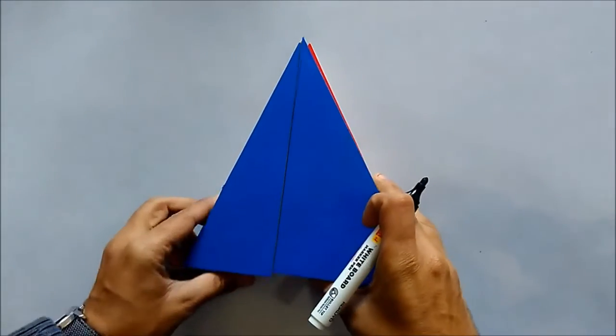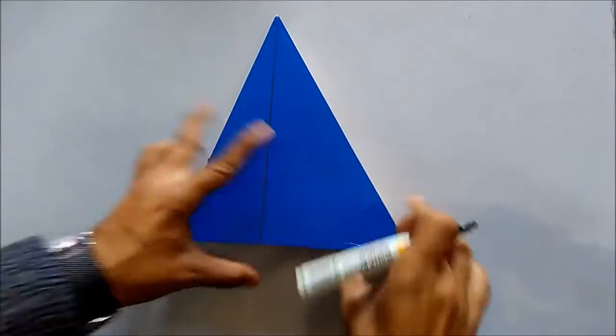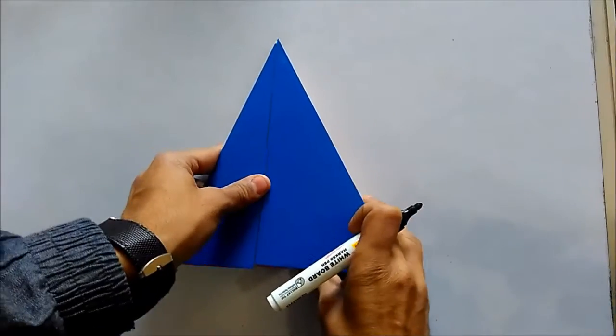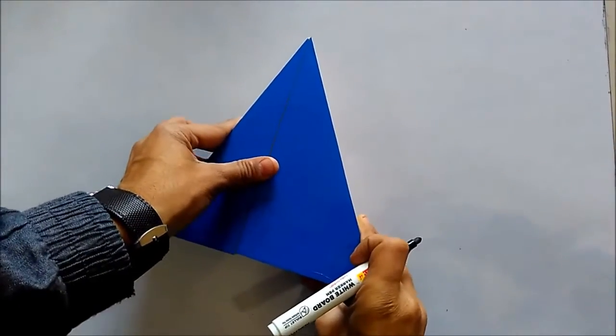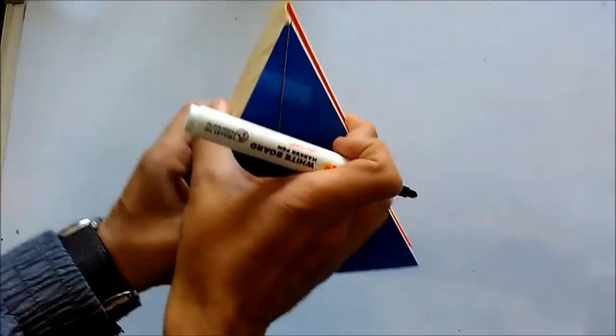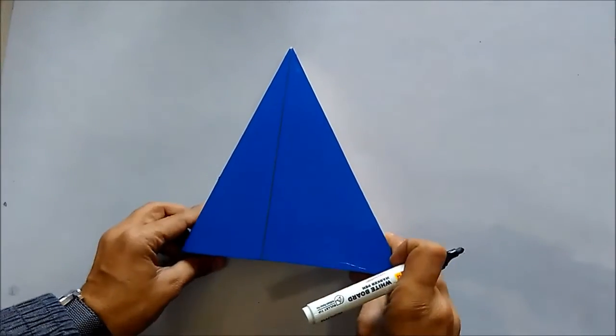What we see here is these two triangles coincide with each other, they overlap each other. That means the area and dimensions of both these triangles are exactly the same. You can see their length, their height, everything is the same. So we can say these are similar triangles.